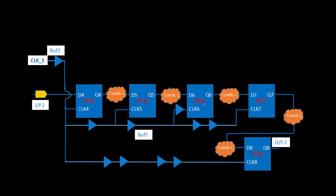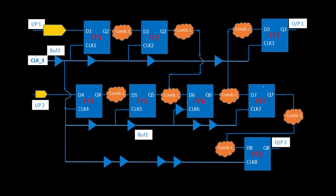As discussed previously, to fix the hold violation between FF5 and FF6 we would remove buffer one. So if we remove buffer one, what happens to the skew between those two — it is going to increase. We know very well that if the skew increases, there are chances of hold violation, or you can say the chances of hold violation increase.